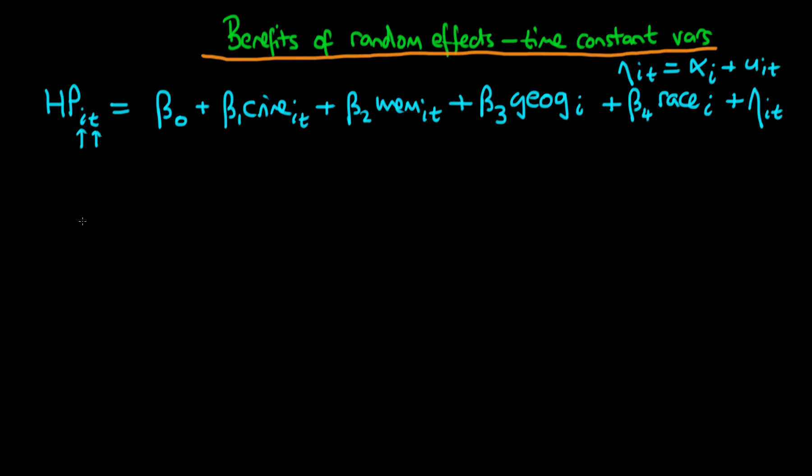So why can we necessarily estimate the effect of geography and race on house prices when we couldn't do it before using fixed effects or first differences estimation?